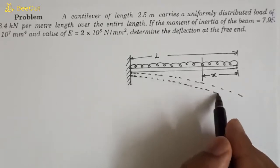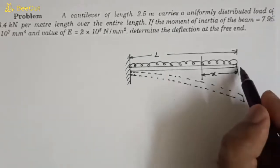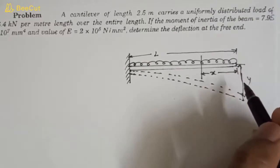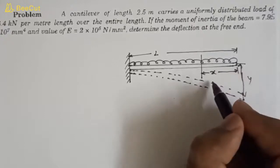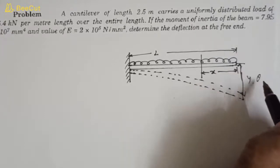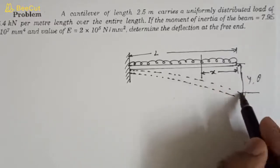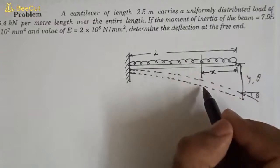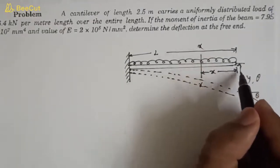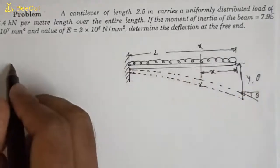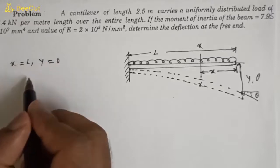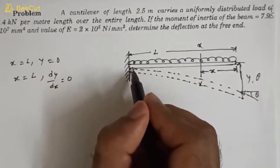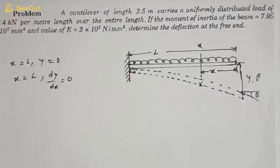Suppose the beam will deflect like this — this is y, we have to get the deflection, and this is theta B for slope. We have boundary conditions. Suppose at x distance we are choosing a section XX from the right-hand end. At x = l, y will be zero, and at x = l, dy/dx will also be zero, because this end is fixed — there will be no deflection and no slope here.